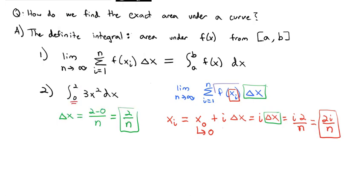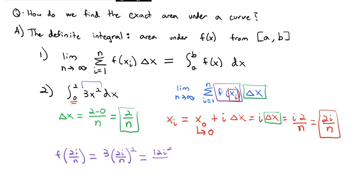Now let's figure out f(x_i). Since x_i is 2i over n and our function is 3x², we have 3 times (2i/n)². That gives us 3 times 4i²/n², which simplifies to 12i² over n².